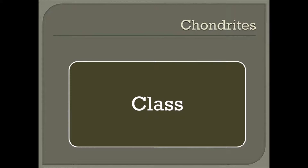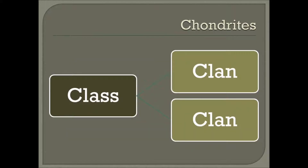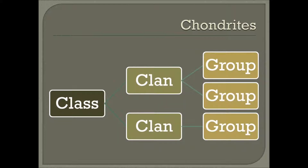A chondrite class consists of two or more groups that share primary whole rock chemical and oxygen isotopic composition. Clans may represent materials from the same local nebular reservoir, or materials that experienced different secondary histories such as brecciation, impact events, oxidation or reduction, and/or hydrothermal alteration. Chondrite groups are thought to be fragments of the same or similar asteroid.